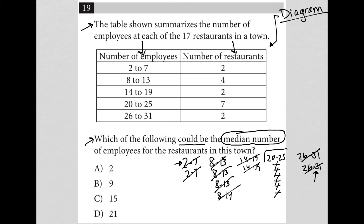So that means the middle number has to be from the restaurant group that has between 20 and 25 employees, and therefore the answer must be choice D — it's the only answer choice with a value between 20 and 25. Hopefully that made sense. You can see how I solved that without needing to know the exact number of employees. I just listed them in ascending order, started crossing out from the ends, found which range would be my median — 20 to 25 — and that leads me to the direct answer of 21.